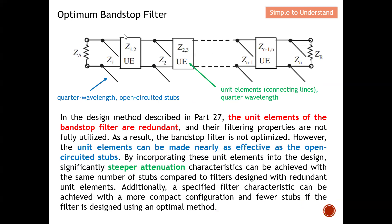In the Part 27 series discussion, I designed a band stop filter using open circuit stubs together with a unique element. However, for that design, the unique element — sometimes called the connecting line — is redundant. It does not contribute any filtering properties; its purpose is only to separate the open circuit stubs. Therefore, the band stop filter from Part 27 is not optimized, as these elements do not affect the frequency response.